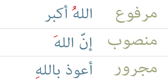We can tell which state a word is in because of the haraka that appears at the end of the word. Generally speaking, when an ism is marfoo it takes a dhamma; when it is mansub it takes a fathah; and when it is majroor it takes a kasrah. Marfoo is the default state for an ism. Since Allah begins the sentence Allahu Akbar, it goes into its default state of marfoo, ending in a dhamma — which makes the 'oo' sound — so the result is Allahu Akbar.